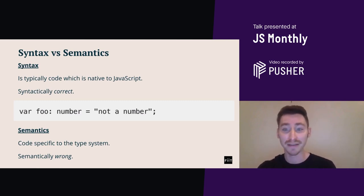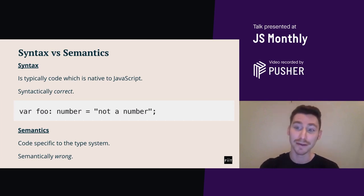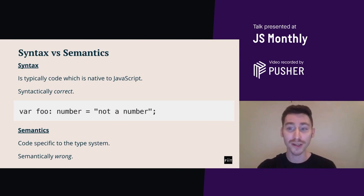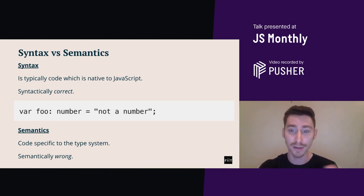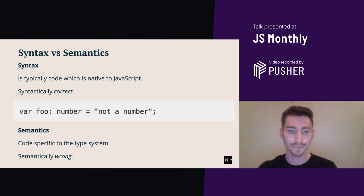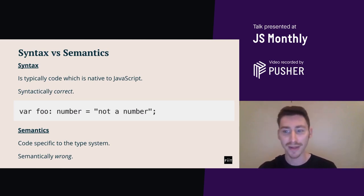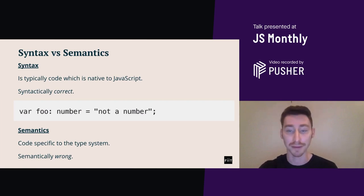In AST form, code is very easy to manipulate. Operations like adding to code, removing, or even replacing parts becomes much easier. An example is the code at the top of the image, and just below that is the AST it would produce. There are websites such as astexplorer.net which are great at letting you write some JavaScript code and then immediately see its AST.